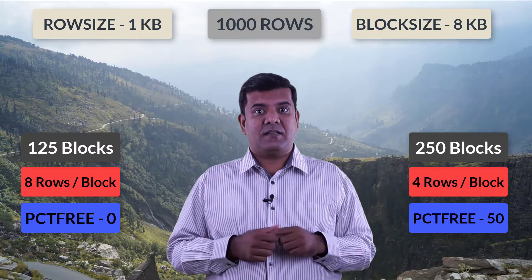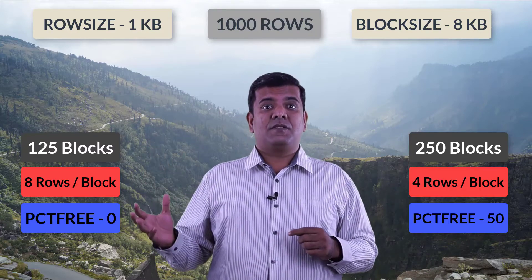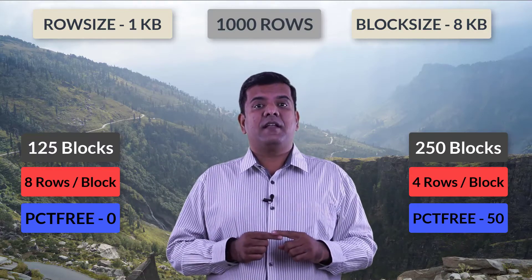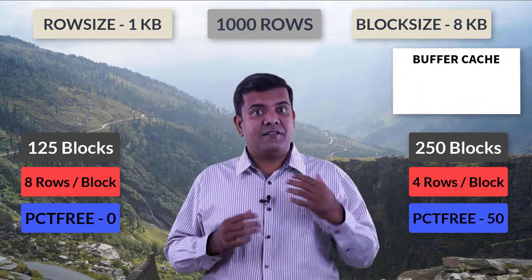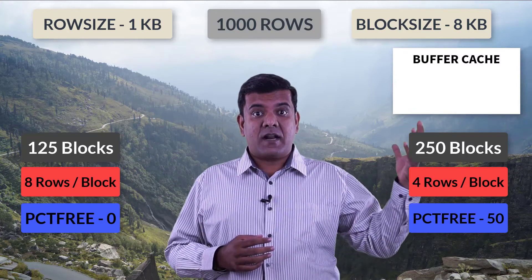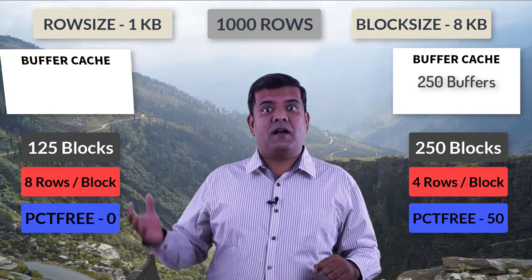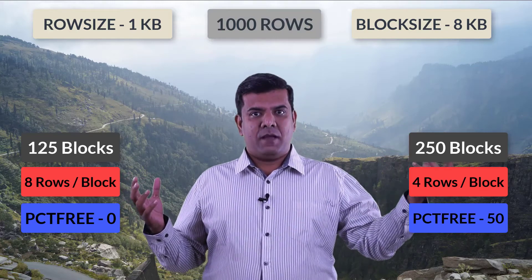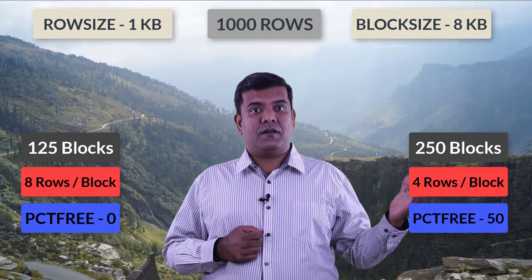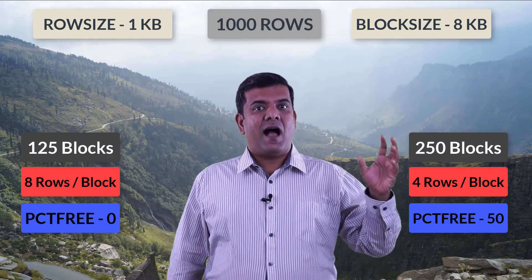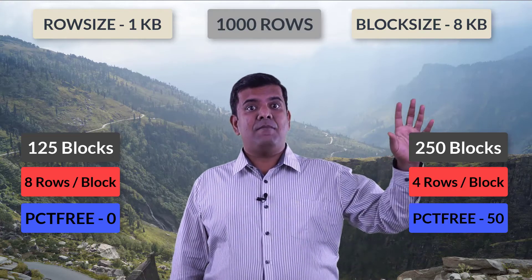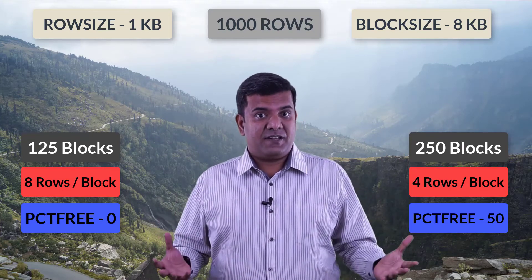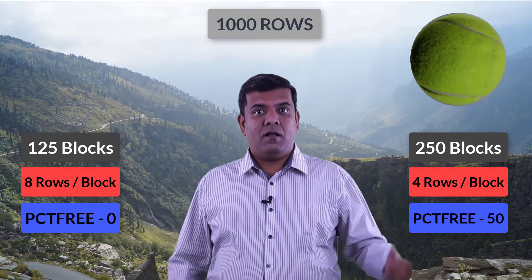The IO required to read this data will differ. The same table with 50% PCTFREE will require 250 block reads as IO, whereas with 0% PCTFREE it is sufficient to read it with 125 block reads. Not only does this affect IO, but also the buffer cache, which is organized in blocks. Reading the larger segment requires 250 buffers, whereas the smaller requires only 125 buffers. You will be wasting memory, doing more IO, keeping 50% empty space in memory, and then complaining that your SGA or buffer cache is insufficient.